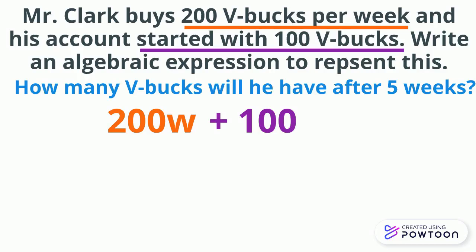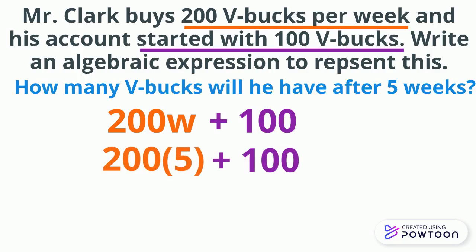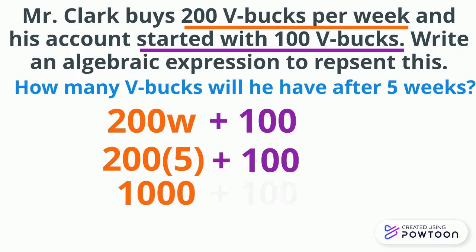Now, if we ask how many V-bucks he'll have after five weeks, we evaluate the expression by substituting 5 for the variable W. We get 200 times 5, which equals 1,000, then add 100, giving us a total of 1,100 V-bucks.